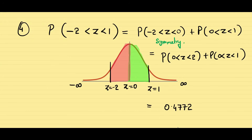So the area between minus 2 to 1 is 0.4772 plus 0.3413.